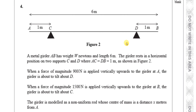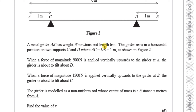The girder is modelled as a non-uniform rod whose center of mass is a distance x meters from A. We have to find the value of x. We don't know the weight of the rod and we don't know the distance of the center of mass. We also won't know one of the reaction forces in each case — we'll know that one of them is zero if it's about to tilt. If it's about to tilt about D, the reaction force at C would be zero, but the reaction force at D would equal the resultant of the weight and the applied force. We don't know the weight of the rod, so we won't know the reaction at D.